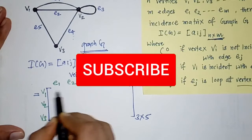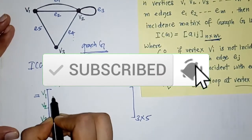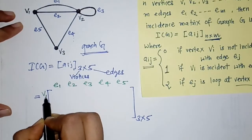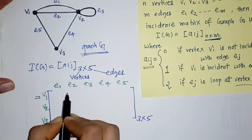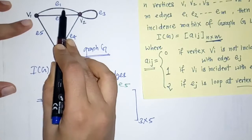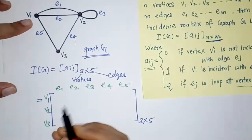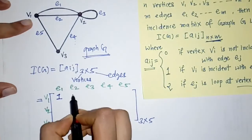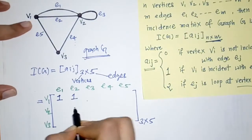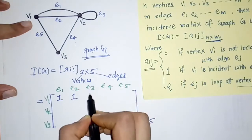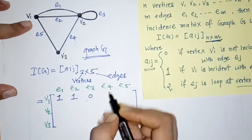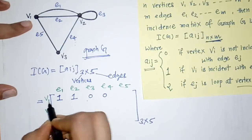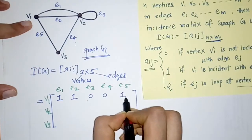Now we have to find all these elements. First we check whether vertex v1 is incident on each edge. Vertex v1 is incident with e1, so we write 1. Vertex v1 is incident with e2, so we write 1. Vertex v1 is not incident with e3, so we write 0. V1 is not incident with e4, so this is 0. V1 is incident with e5, so we write 1.